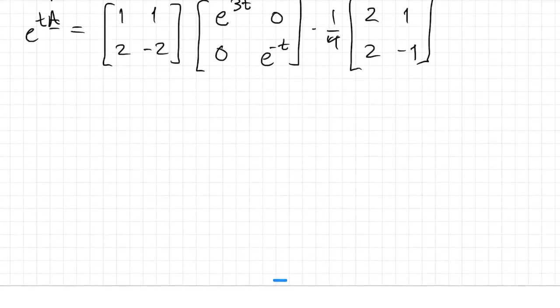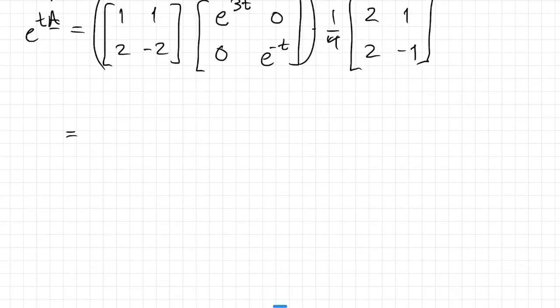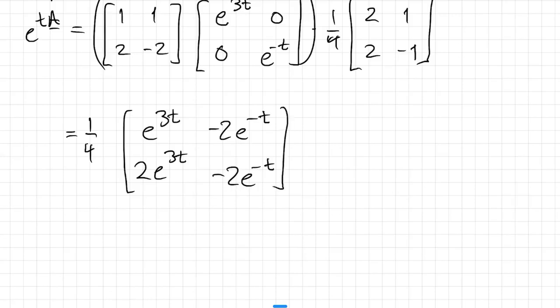Now it's just some matrix multiplication to get to the answer. One quarter is a scalar, I can pull that through the whole thing. Multiplying the first two together, I get e to the 3t plus zero, I get zero minus 2e to the negative t, and then I get 2e to the 3t and negative 2e to the negative t. The last matrix comes down, and now I multiply these two together to get the final result.